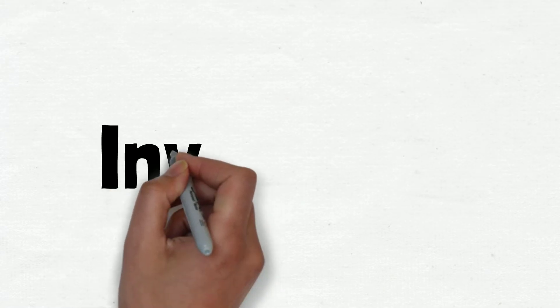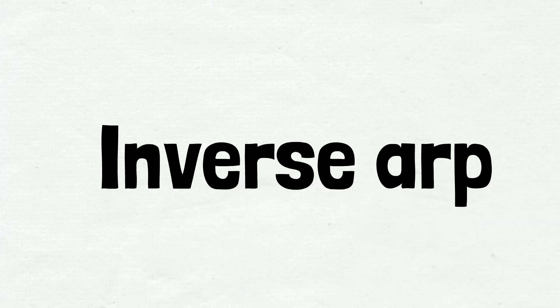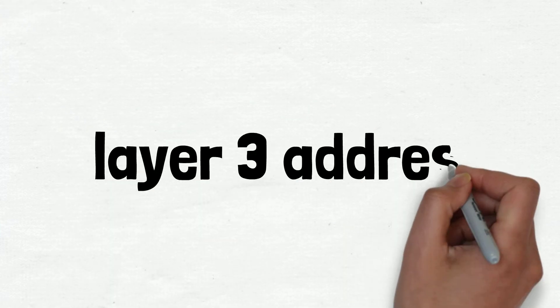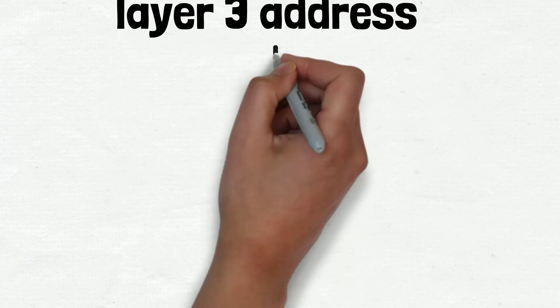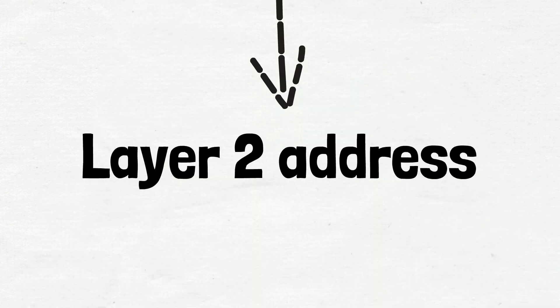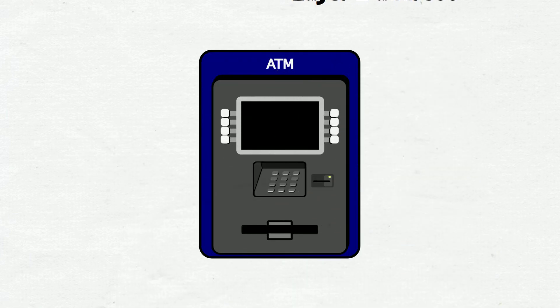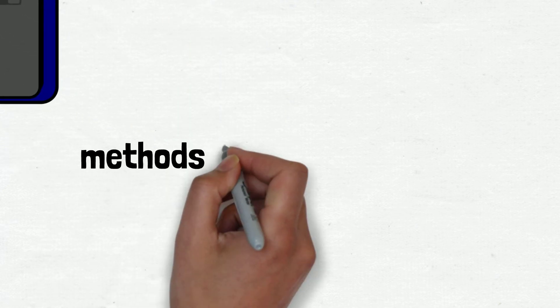Now let's move on to something called Inverse ARP. It's just the opposite of ARP — it's used to map a Layer 3 address (IP address) to a Layer 2 address (MAC address). Inverse ARP is mainly used in Frame Relay and ATM networks.